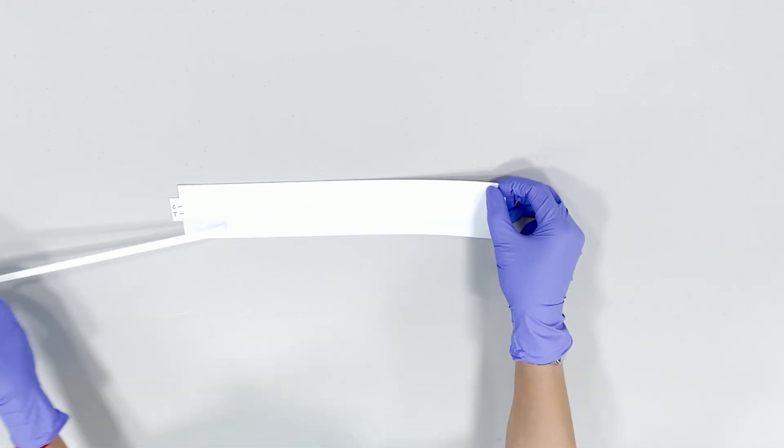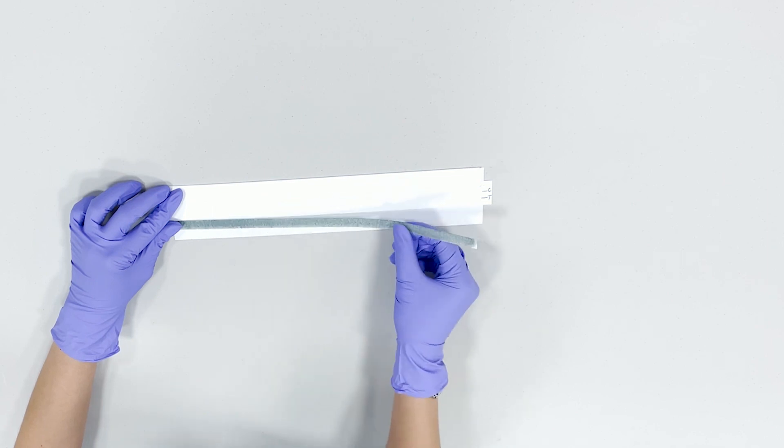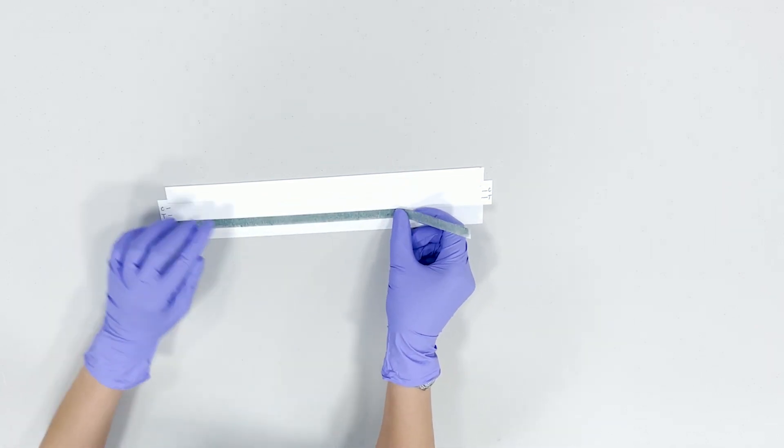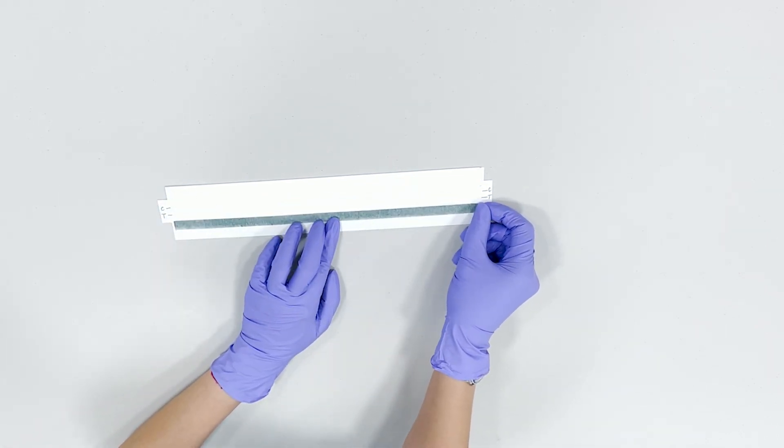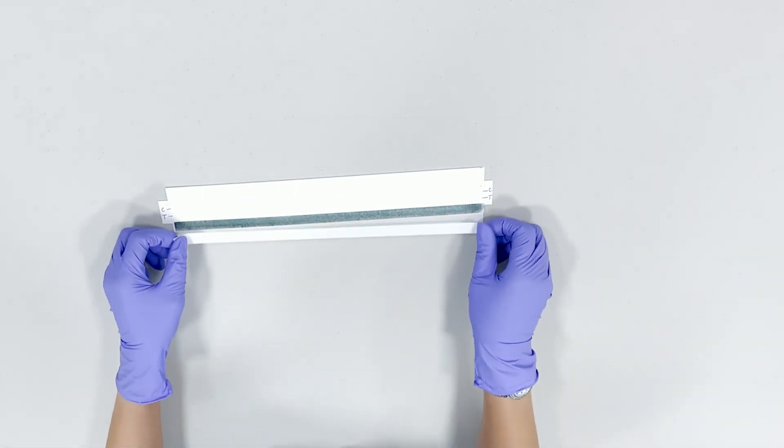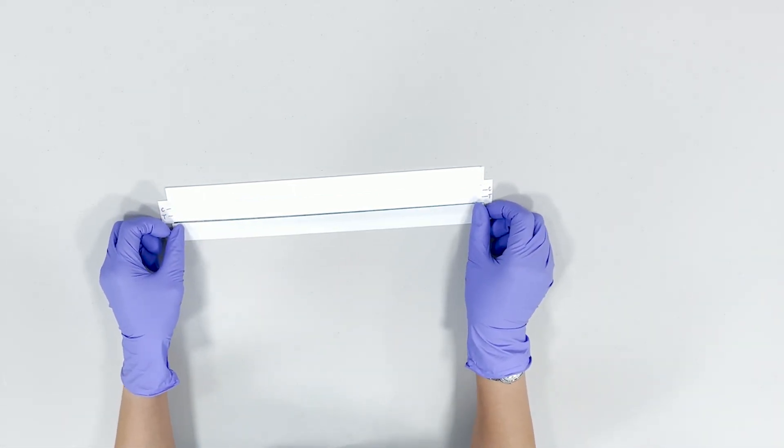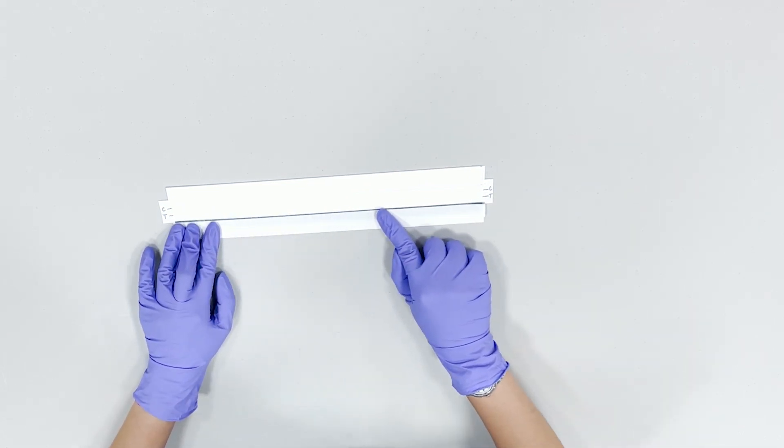Peel off the conjugate pad liner. Align the conjugate pad from the bottom slit making sure it overlaps the membrane by 1-2 millimeters. Place the shiny side of the liner on top of the conjugate pad and run your finger across the pad.